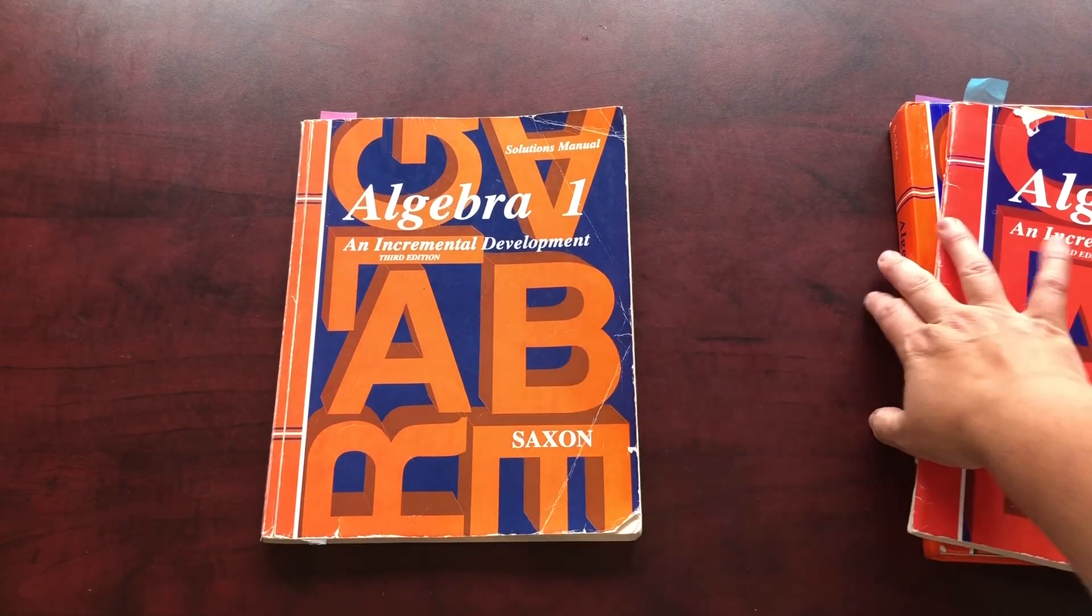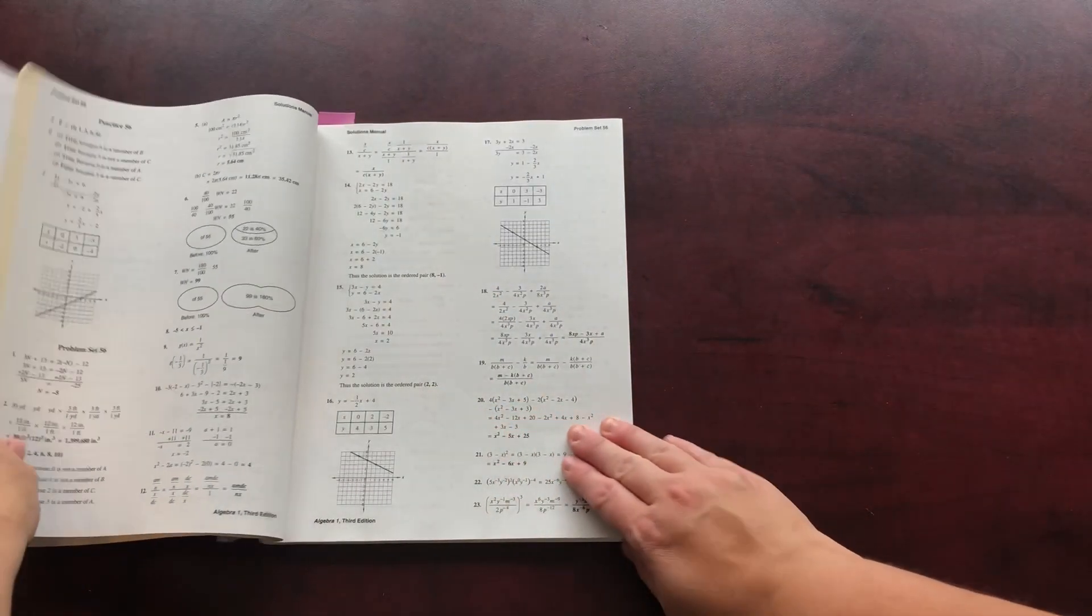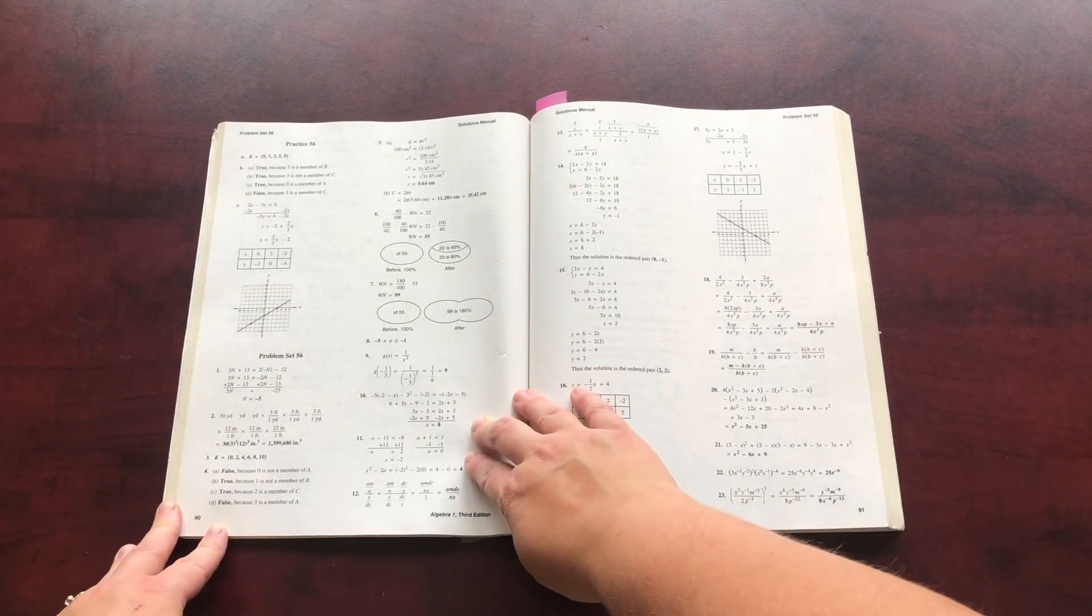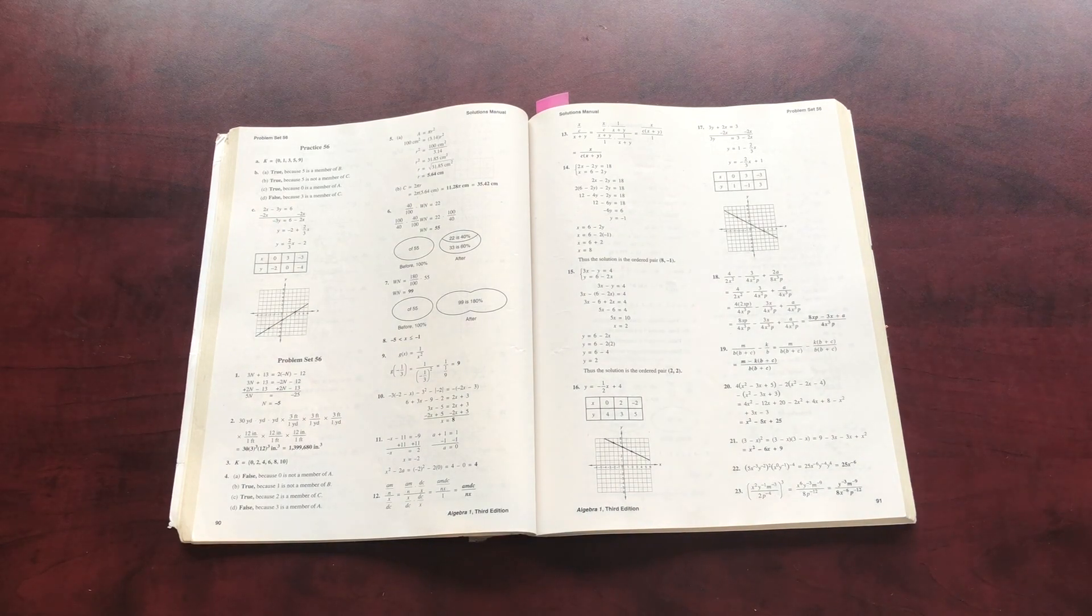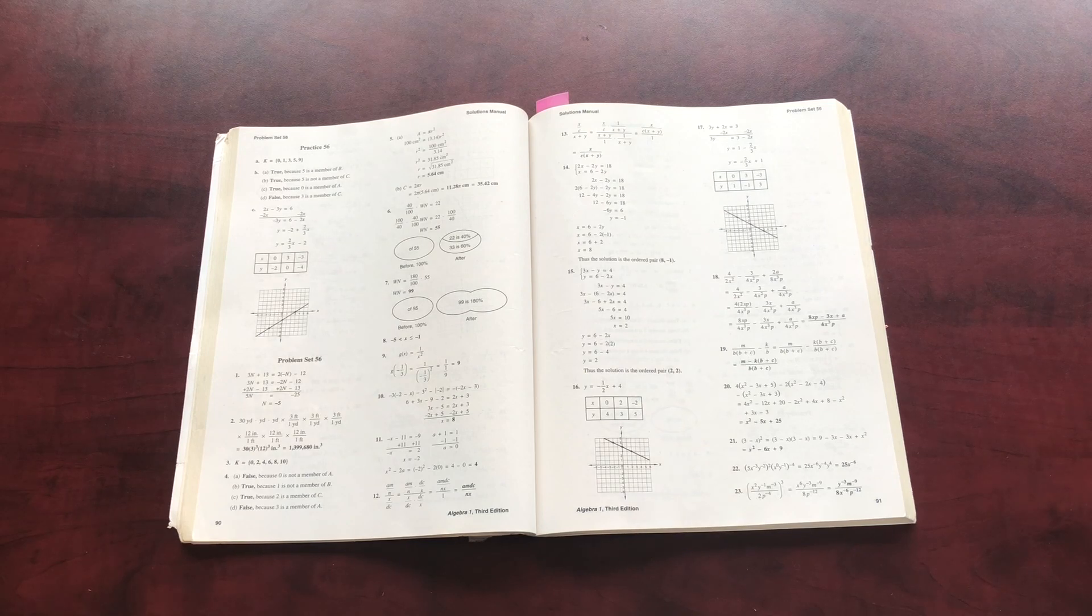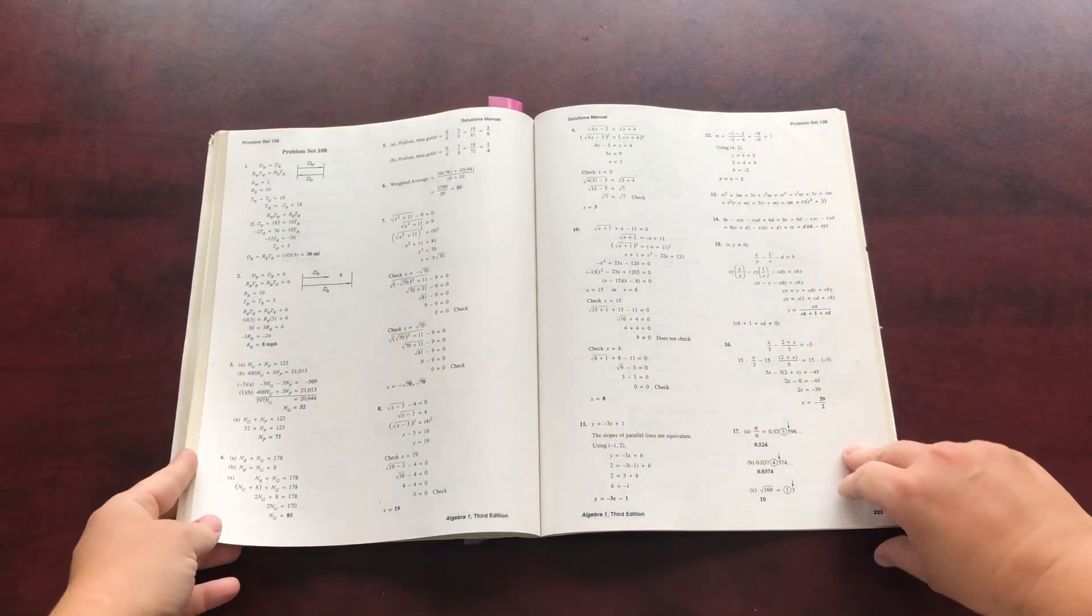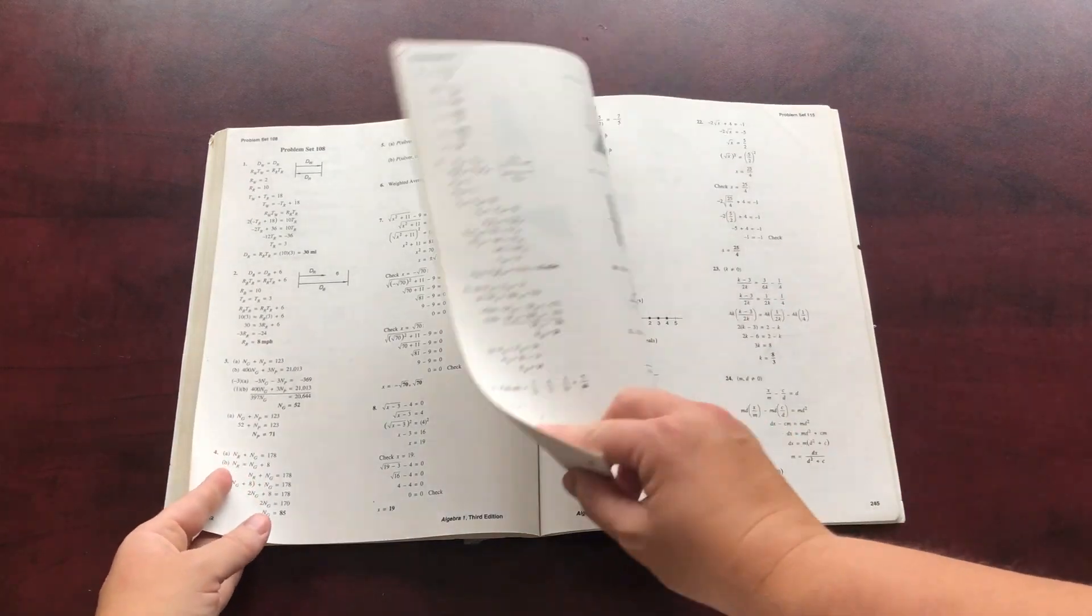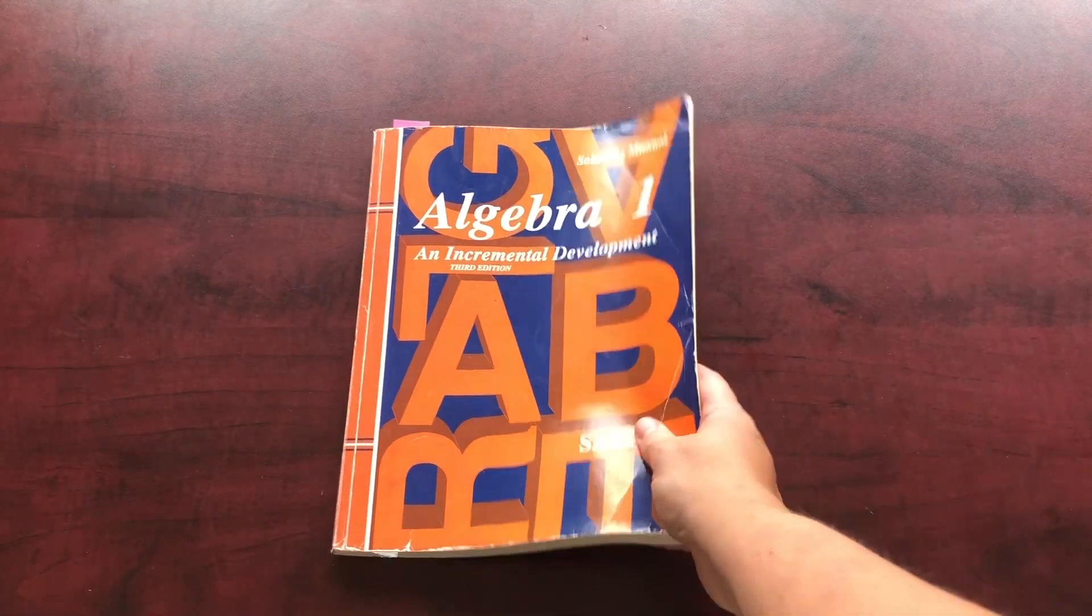So again, I felt it was worthwhile to invest in the solutions manual where I'm going to be able to see the explanation of each question and break it down. Now I have to say, Algebra one is where I started to top out on my math knowledge. Towards the end of this course, it was getting kind of into areas I didn't remember too well, and were a little difficult. So this was so helpful to have. So now I'm going to give you a look at Algebra two.